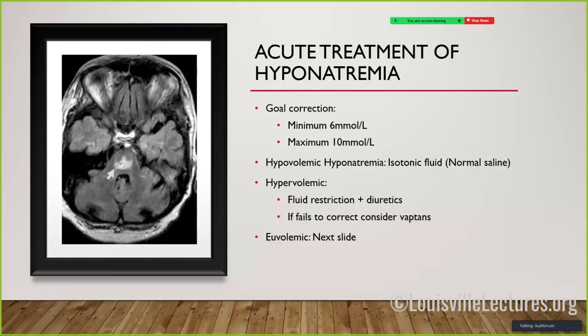That image is central pontine myelinolysis - brain damage from correcting sodium too quickly. For acute hyponatremia, shoot for a correction range of 6 to 10 millimoles per liter per 24 hours. The actual literature shows a change of 18 to 24 in 48 hours causes CPM, but daily goals are set so you don't overshoot over two days. Most experts recommend staying closer to 6 unless the patient is having extreme seizures with very low sodium values.